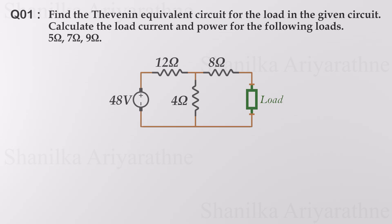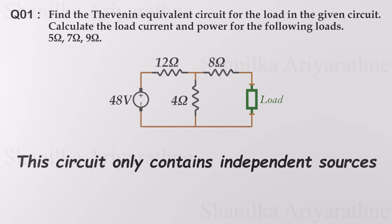This is our first example. Find the Thevenin equivalent circuit for the load in the given circuit. Calculate the load current and power for the following loads. The goal is to find the power consumption of each light bulb when connected to the circuit. This circuit only contains independent sources — a single voltage source. Let's follow the mentioned steps.